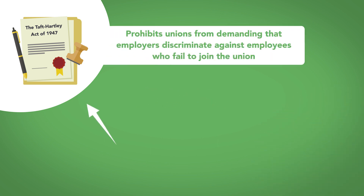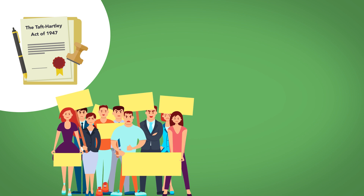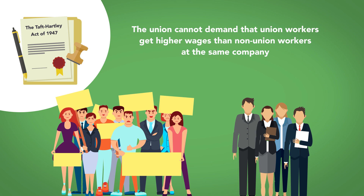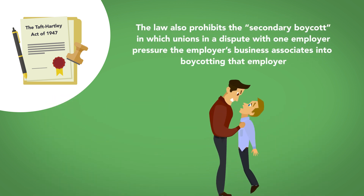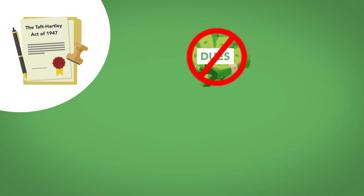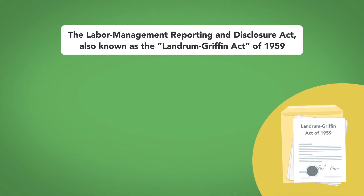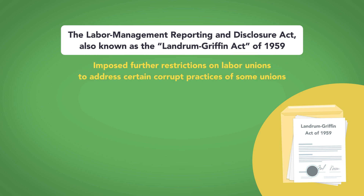The first is the Taft-Hartley Act of 1947, which prohibits unions from demanding that employers discriminate against employees who fail to join the union. For example, as part of the collective bargaining process, the union cannot demand that union workers get higher wages than non-union workers at the same company. The law also prohibits the secondary boycott, in which unions in a dispute with one employer pressure the employer's business associates into boycotting that employer. Unions are also prohibited from charging excessive dues and from demanding that an employer pay for work not performed. The second is the Labor Management Reporting and Disclosure Act, also known as the Landrum-Griffin Act of 1959, which imposed further restrictions on labor unions to address certain corrupt practices of some unions.